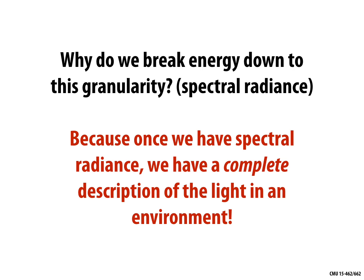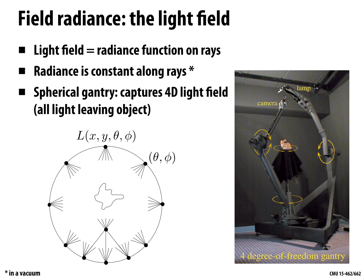This information — the radiance or spectral radiance at every point in space in every direction — is called the light field. The light field assigns to each possible ray in space a number, which is the radiance. Radiance is, at least in a vacuum, constant along straight rays. There are physical devices that capture chunks of the light field — for example, a spherical gantry captures the four-dimensional light field leaving an object, parameterized over x, y, theta, and phi.